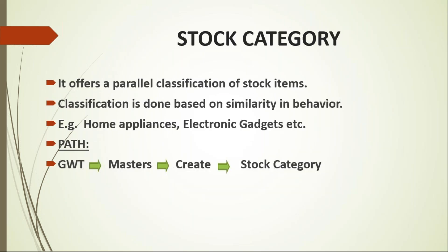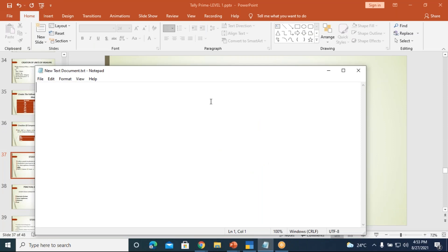I hope all of you have finished compound units of measure. Now we move on to stock categories. Stock category offers a parallel classification of stock items based on similarity in behavior — for example, home appliances, electronic gadgets, etc. Now we have a hierarchy: first we have stock category, then stock groups, and then we have the stock items.